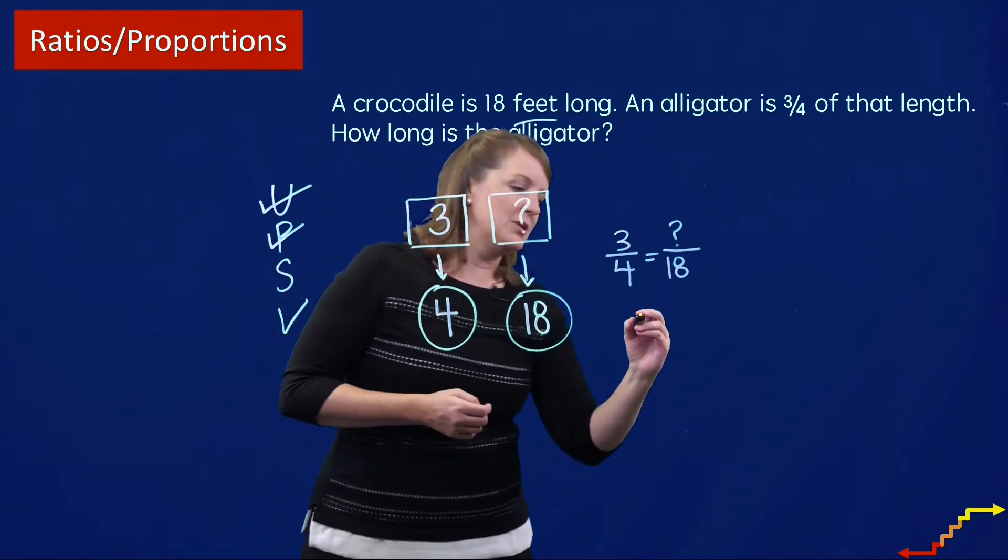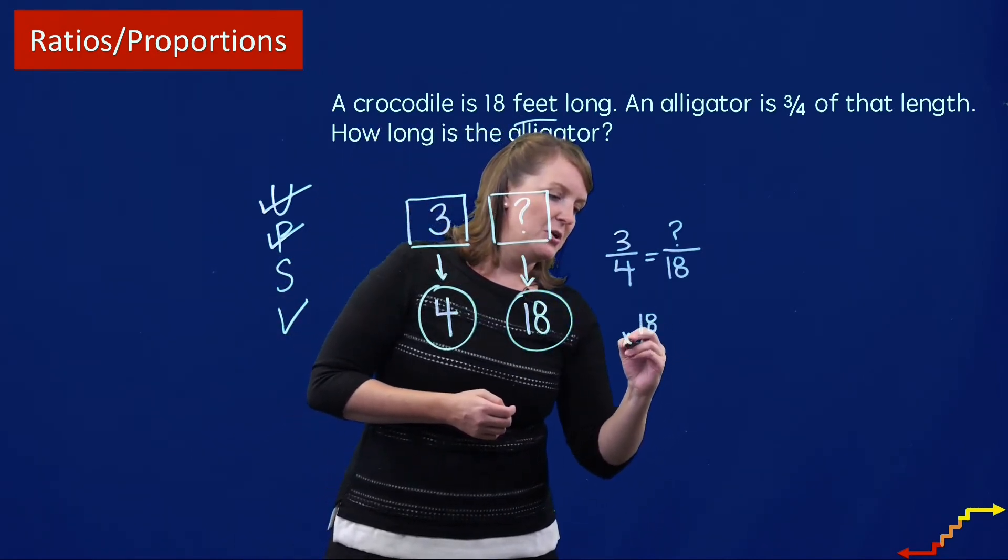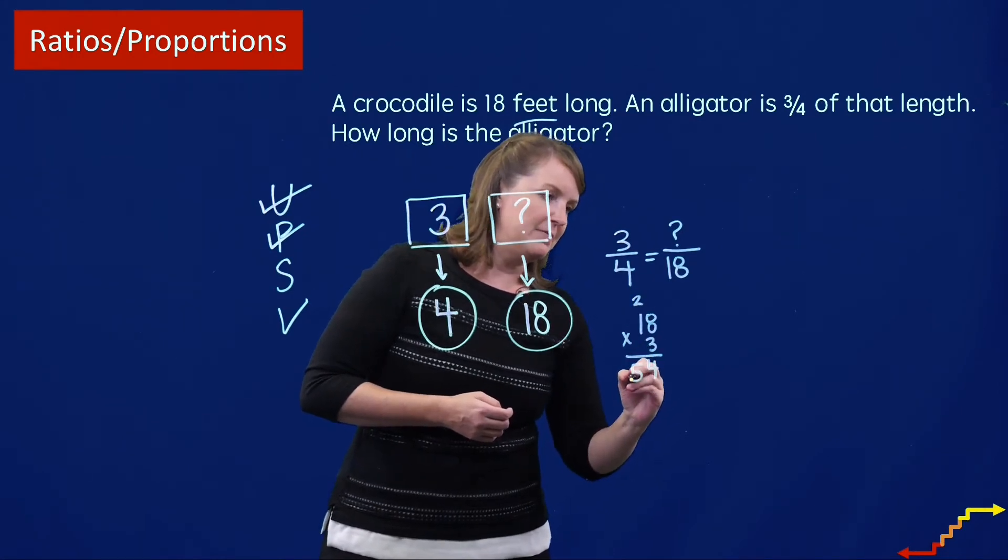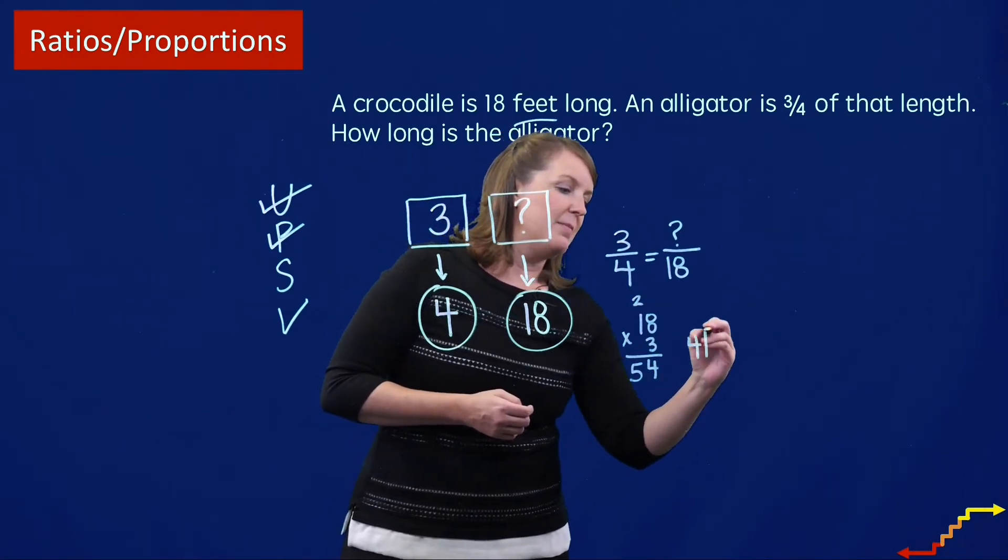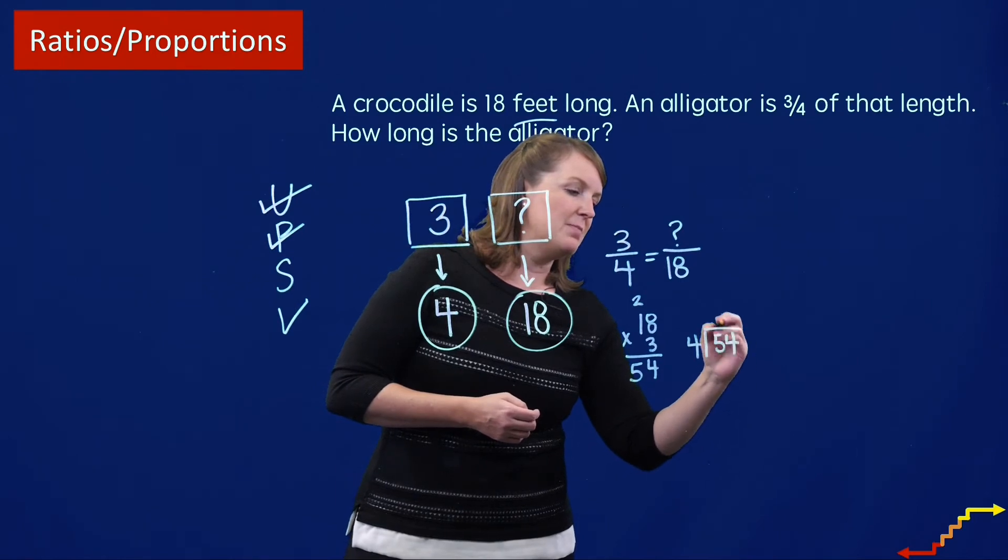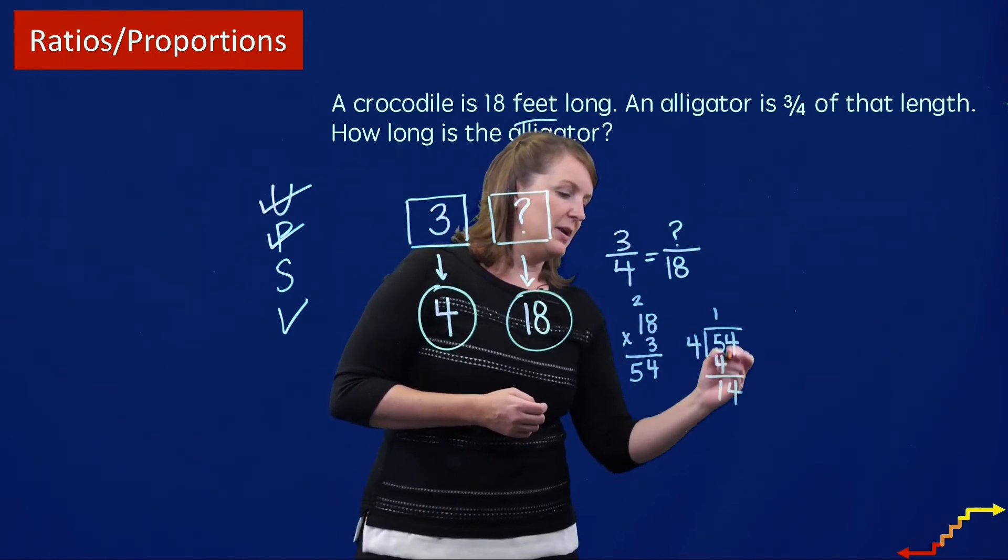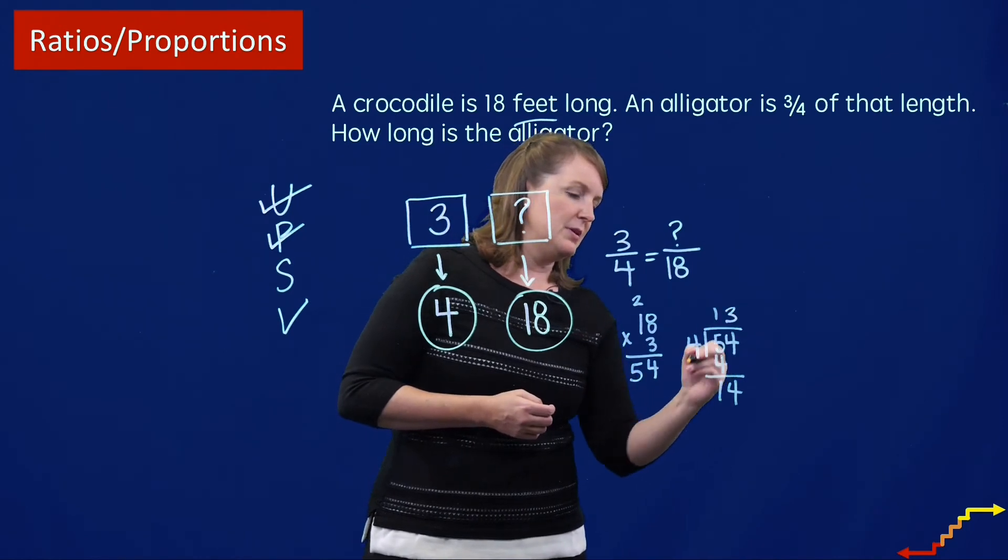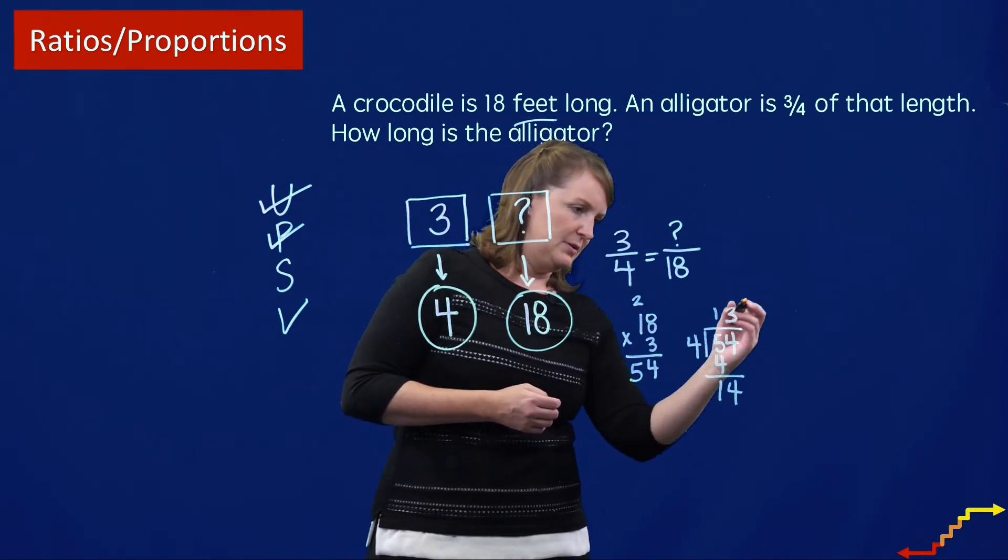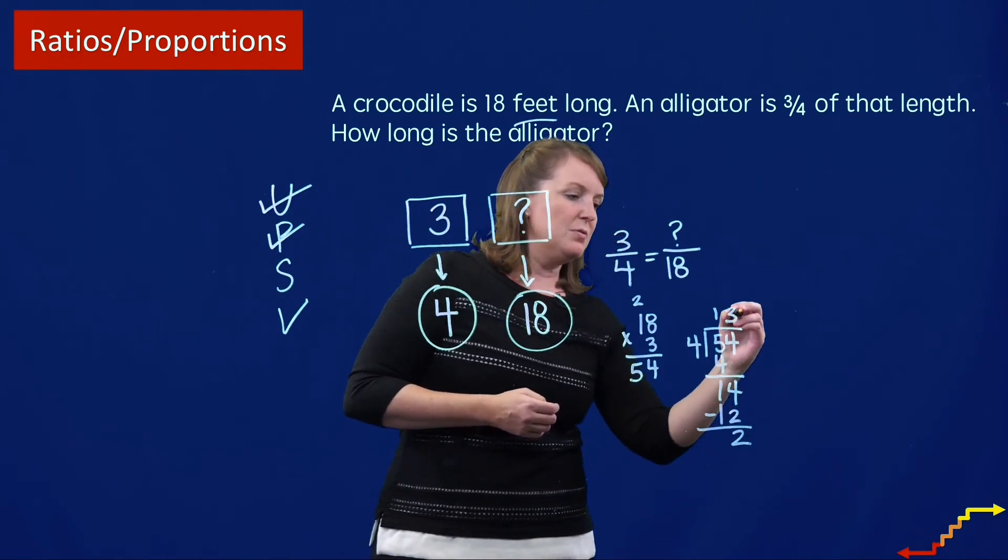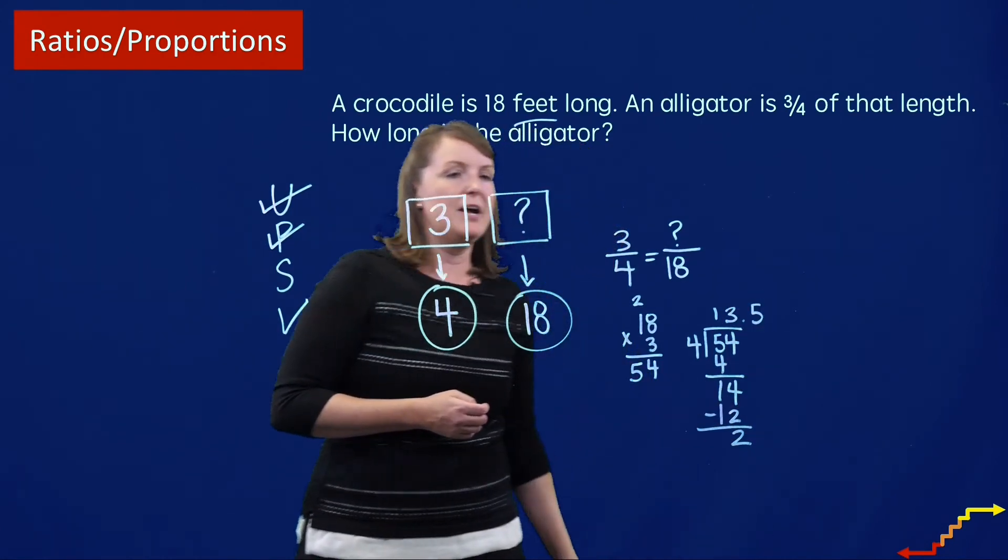And I could do some cross multiplication and then division. So 18 times 3, 54. And then figure out how many sets of 4 I can make with 54. And here I can make 4 tenths, 3, let's see, that's 12.